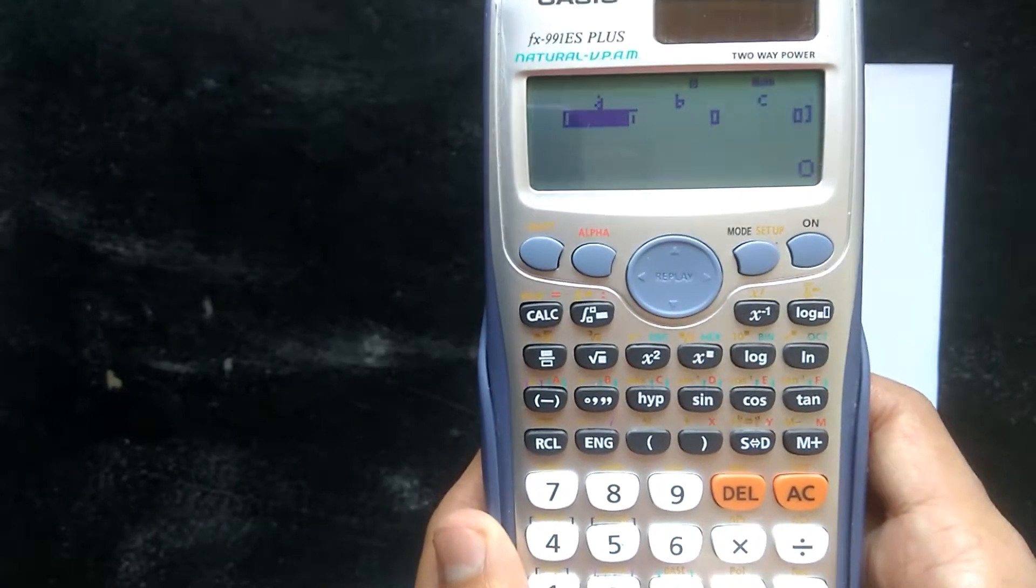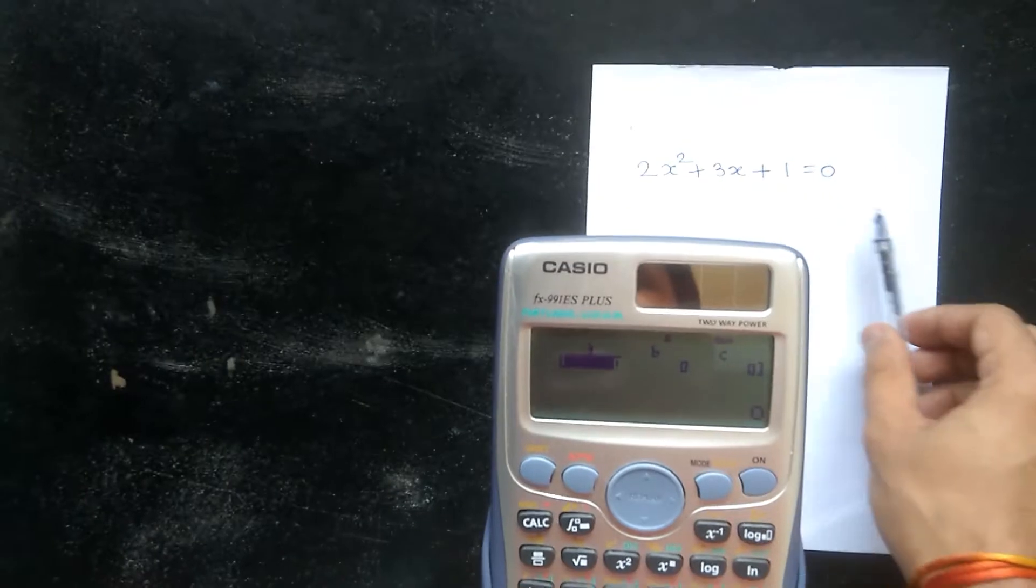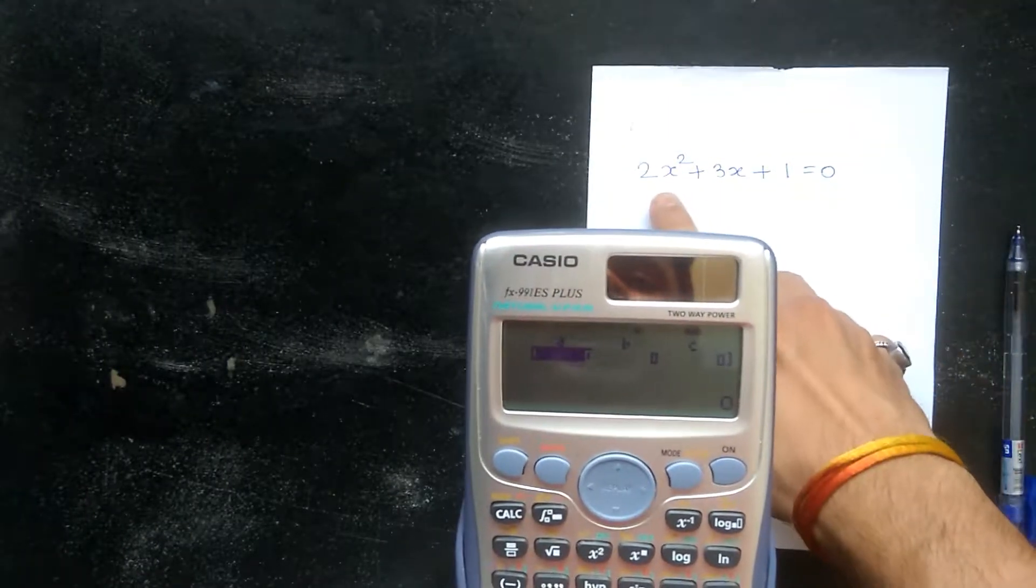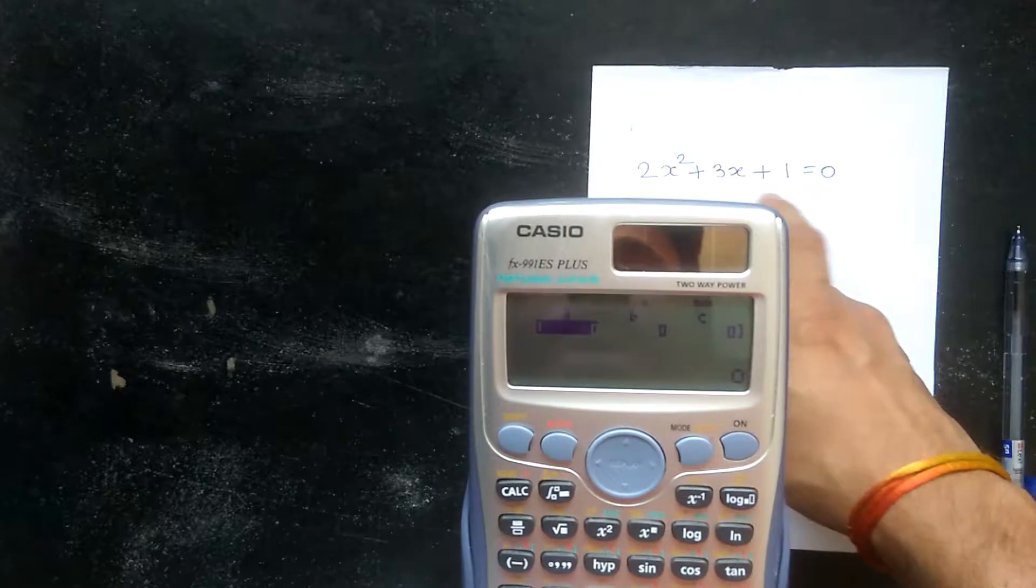I got this quadratic equation from a book. This has an a value of 2, b value of 3, and c value of 1. We have to put this into the calculator.